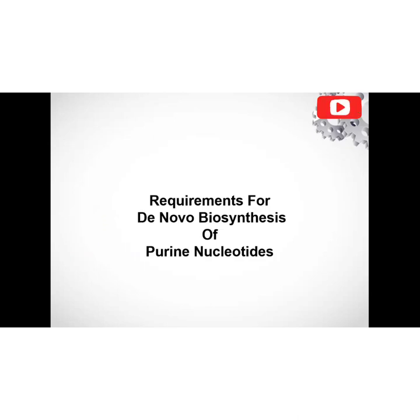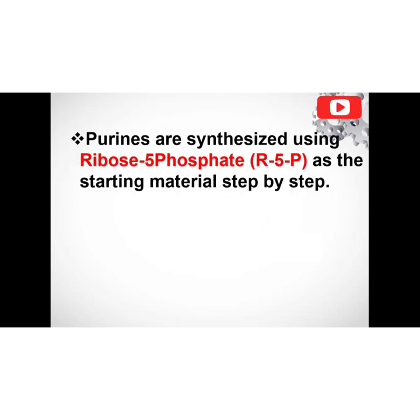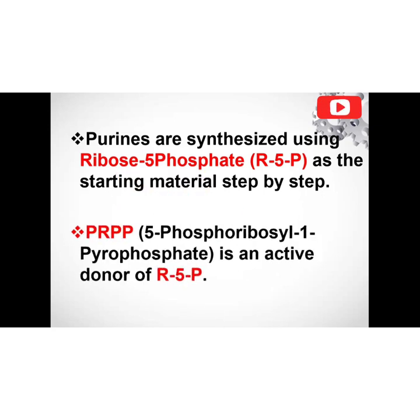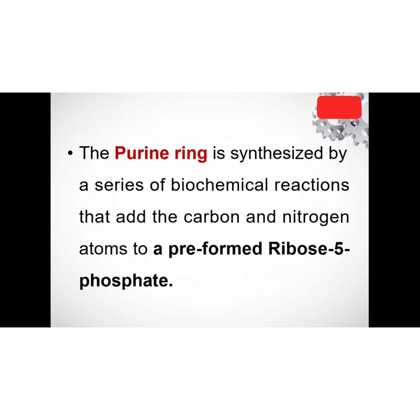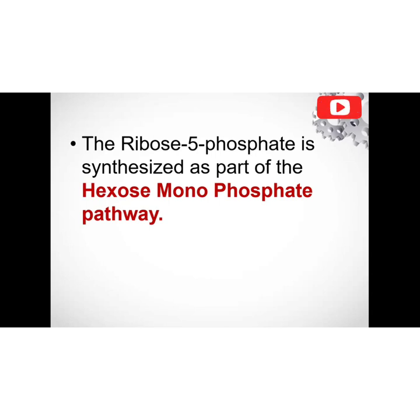For the requirements of de novo biosynthesis of purine nucleotides: purines are synthesized using ribose-5-phosphate as the starting material. The active donor of the ribose-5-phosphate is 5-phosphoribosyl-1-pyrophosphate, also called PRPP. The purine ring is synthesized by a series of biochemical reactions adding carbon and nitrogen atoms onto the preformed ribose-5-phosphate. The ribose-5-phosphate itself is synthesized as part of the hexose monophosphate shunt, also called the pentose phosphate pathway.